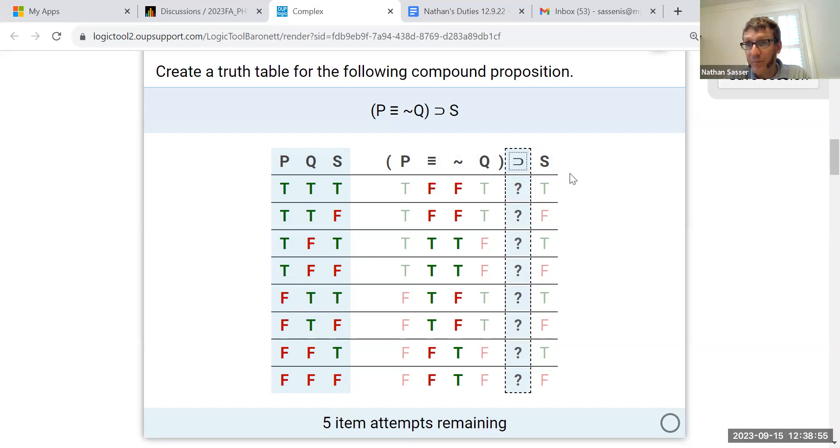And if you remember, the only thing that makes a horseshoe false is if the antecedent is true but the consequent false. In any other circumstance, horseshoe is true.